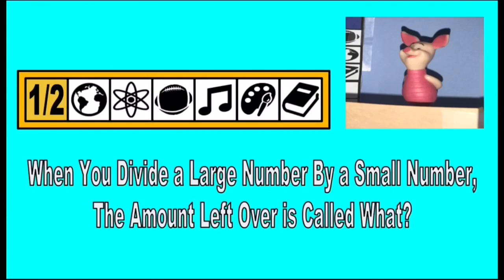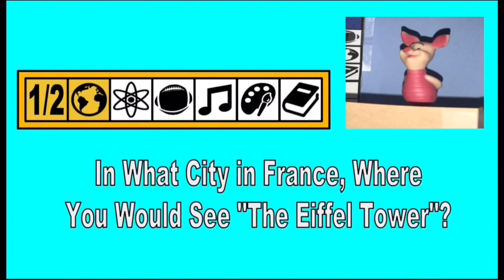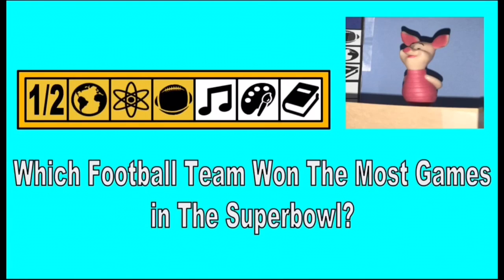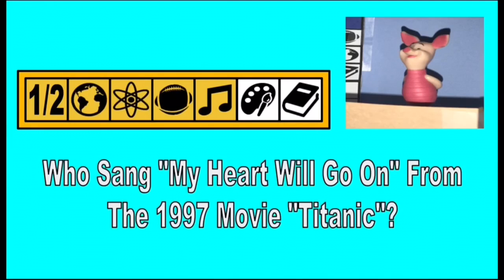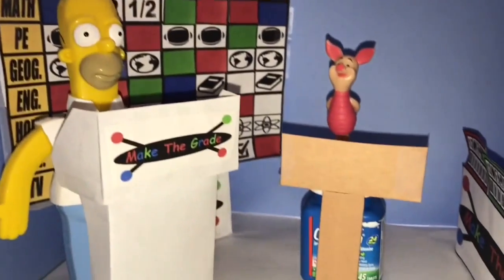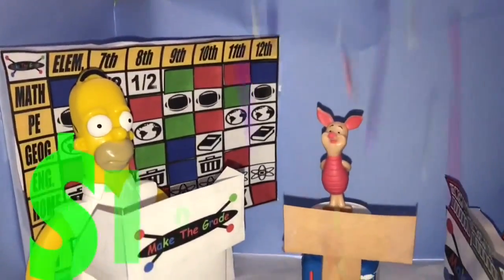Math: When you divide a large number by a small number, the amount left over is called what? The remainder. Correct. Geography: In what city in France would you see the Eiffel Tower? Paris. Correct. Science: What is the element for water? H2O. Right. PE: Which football team won the most games in the Super Bowl? Patriots. Correct. Music: Who sang My Heart Will Go On from the 1997 movie Titanic? Celine Dion. Right. Arts: Which artist painted the Mona Lisa in Italian Renaissance? Leonardo da Vinci. Right. English: Hamlet, Macbeth, and Othello are plays written by who? Shakespeare. Yes!